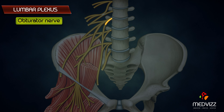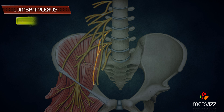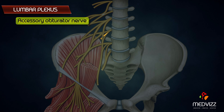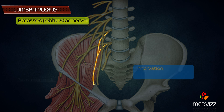The obturator nerve emerges beneath the medial border of the psoas major, runs downwards and forwards along the lateral wall of the true pelvis, and enters the thigh by passing through the obturator canal — it will also be discussed in detail as a separate topic. The accessory obturator nerve, if present, runs along the medial border of the psoas major and enters the thigh, mainly providing innervation to the pectineus muscle. This completes our detailed discussion of the lumbar plexus and its various branches.